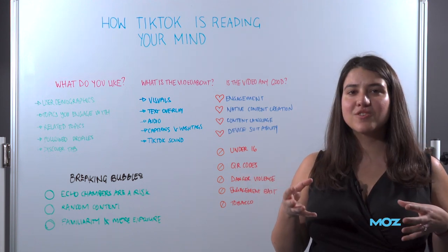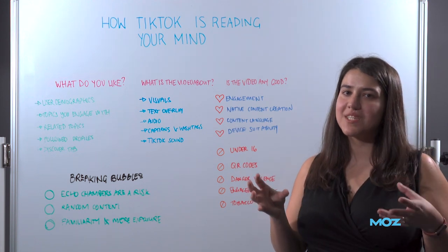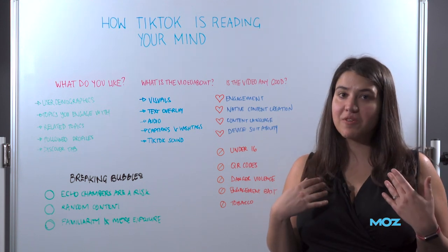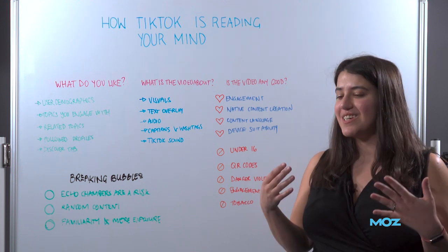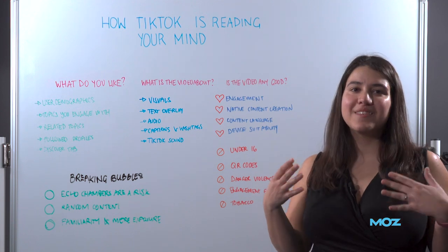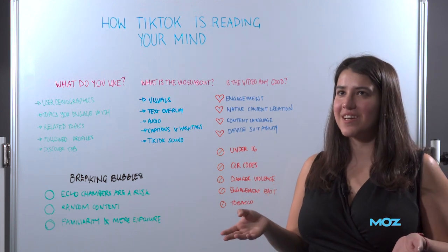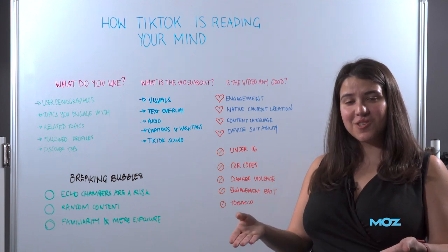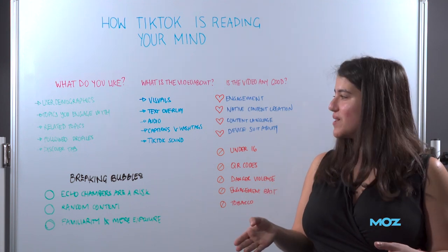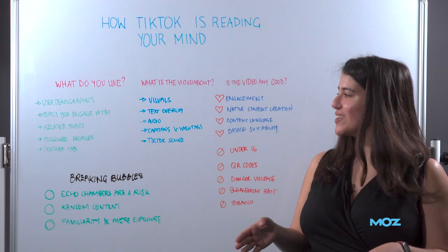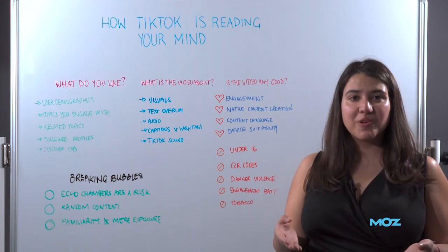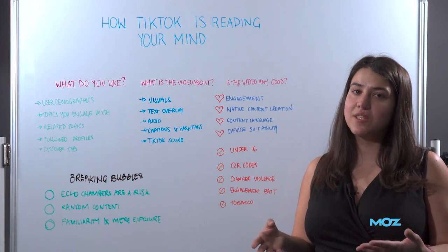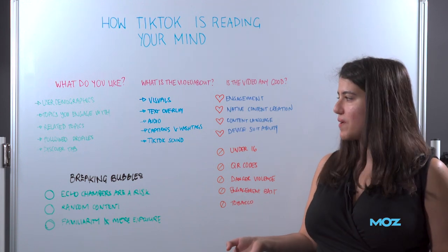After that, TikTok tries to find related topics to the ones you've expressed an interest in. For example, I really like cross stitching — it's not difficult to assume that I also like interior design or flower arrangements, which I do. TikTok shows them to me and I stay on the app much longer than I should. Another point of information is your followed profiles and the topics they talk about or are interested in.